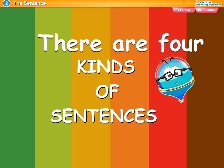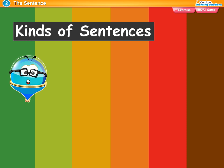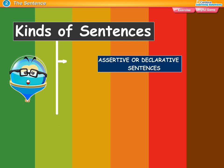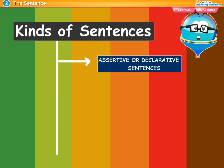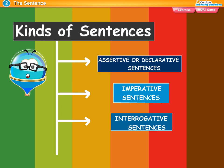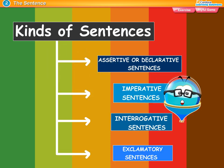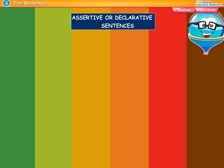There are four kinds of sentences: assertive or declarative sentences, imperative sentences, interrogative sentences, and exclamatory sentences.